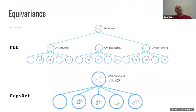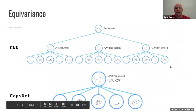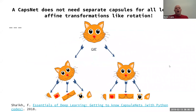To illustrate equivariance with our face example: in a CNN, we cannot represent all angles of the face with just one neuron — we need a zero-degree face neuron, a plus-20-degree face neuron, and a minus-20-degree face neuron. Whereas with a face capsule, we just know we have a face with 0.9 probability, and then we can change the angle value to represent the affine transformations of all the different component parts. With cat pictures, CapsNets don't need separate capsules for all levels of the affine transformation.